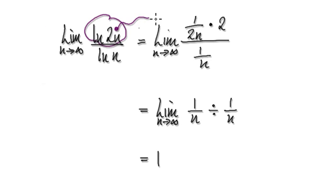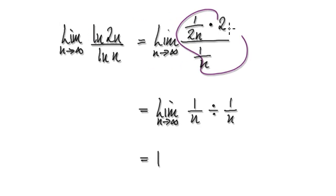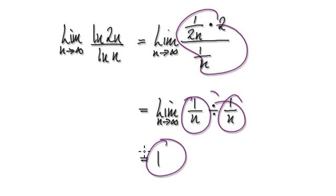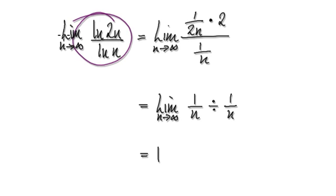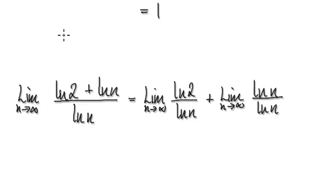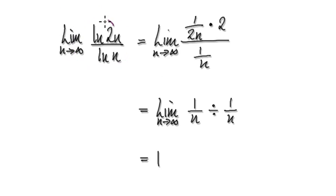Applying L'Hôpital's rule means you differentiate the numerator and then differentiate the denominator. That gives you a new expression, and tying this up it really boils down to (1/n) divided by (1/n), which is 1.